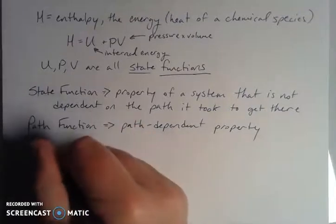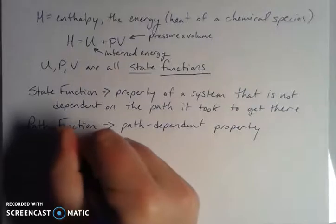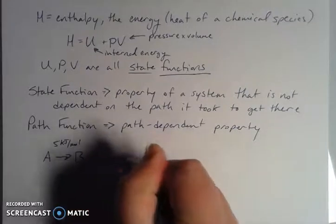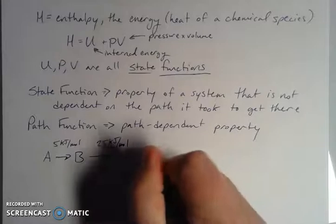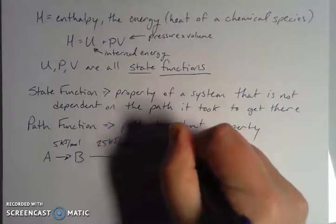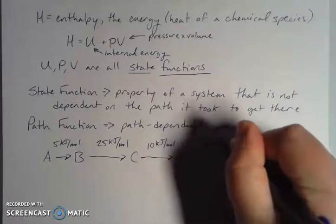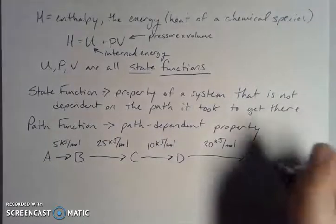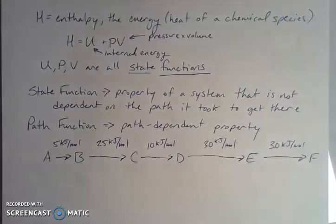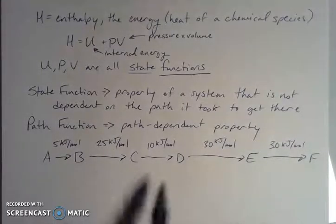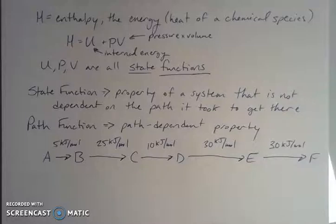Just to illustrate this idea, because I think state functions and path functions are a little bit confusing. If I was to go from A to B, and it took me five kilojoules per mole to get there. And then I went from B to C, and that took me 25 kilojoules per mole. And then I went from C to D, and that maybe took 10 kilojoules per mole. And then from D to E took me 30 kilojoules per mole. And then maybe from E to F, it took me 30 kilojoules.